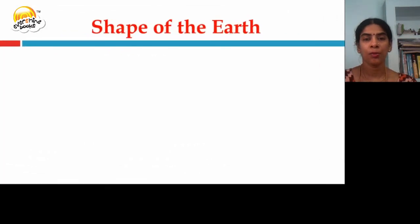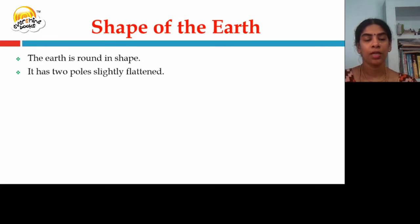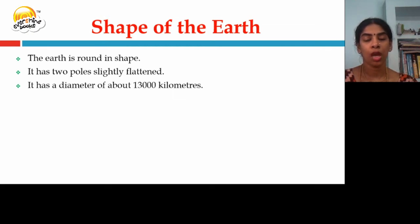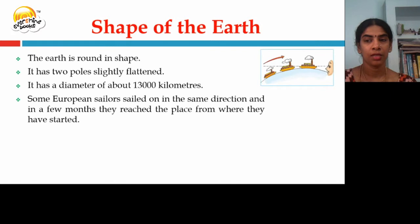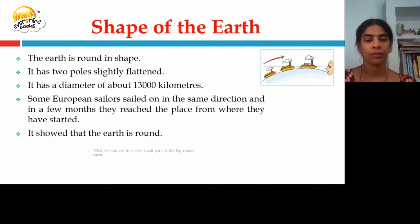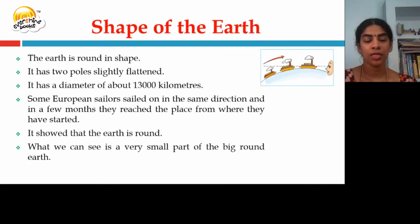The earth is round in shape. It has two poles slightly flattened and a diameter of about 13,000 kilometers. Some European sailors sailed in the same direction for a few months and reached the place from where they had started, which showed that the earth is round. What we can see is a very small part of the big round earth.